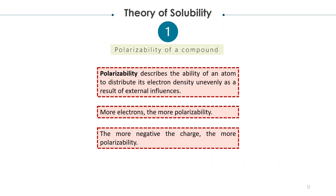The polarizability of a compound is the first factor in the theory of solubility. Polarizability describes the ability of an atom to distribute its electron density unevenly as a result of external influences. This means that the more electrons a molecule has, the more polarizable it is. Also, the more negative the charge, the greater the polarizability.